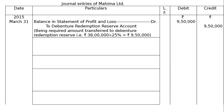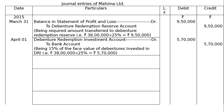Then this money is to be invested — it can be invested on 1st April or 31st March, best is 1st April 2015. Debenture Redemption Investment account debited to Bank account. Being 15% of the face value of debentures invested in Debenture Redemption Investment: ₹38 lakh × 15% = ₹5,70,000. The amount will be ₹5,70,000 in both debit and credit columns.